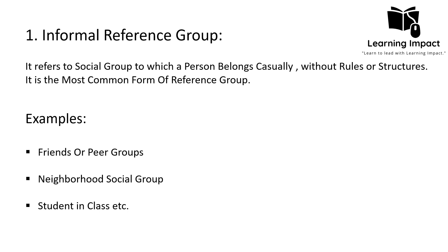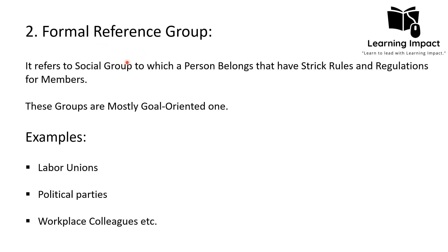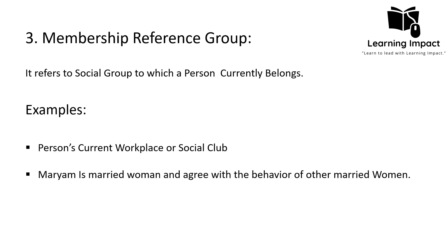The formal reference group refers to a social group with strict rules and regulations for members — mostly goal-oriented. Official documentation is required to join. Examples include labor unions, political parties, workplaces, and schools. To join a labor union, one must follow particular rules and eligibility criteria. Political parties also have regulations, such as assigned political symbols.